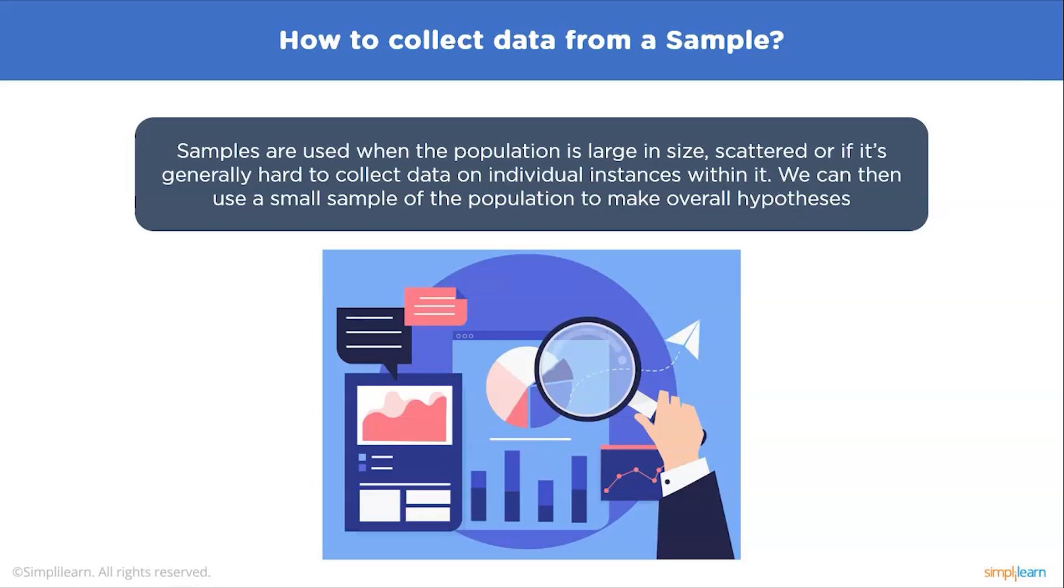Ideally, a sample should be randomly selected and representative of the population. Using probability sampling methods such as simple random sampling or stratified sampling reduces the risk of sampling bias and enhances both internal and external validity.